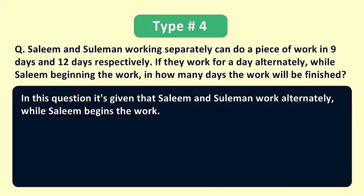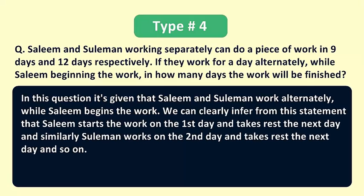In this question it's given that Salim and Suleiman work alternately while Salim begins the work. We can clearly infer from this statement that Salim starts the work on the first day and takes rest the next day, and similarly Suleiman works on the second day and takes rest the next day and so on.